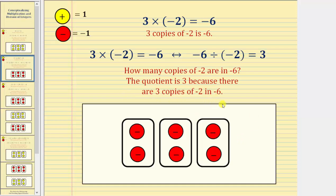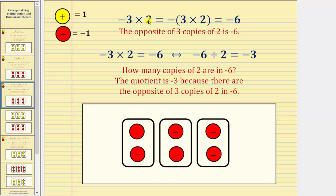So if we understand these first two examples, we will now try to extend this idea for two more products and their corresponding quotients. Here we have negative 3 times positive 2. We will view this negative as the opposite and rewrite this product as the opposite of positive 3 times positive 2, which equals negative 6. The product in this form can be viewed as meaning the opposite of 3 copies of 2 is negative 6.